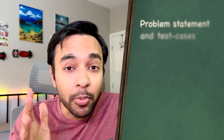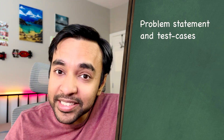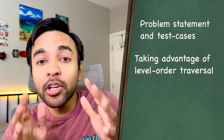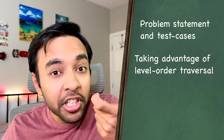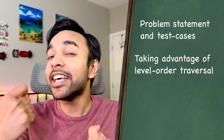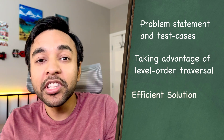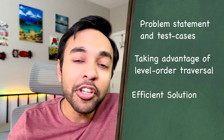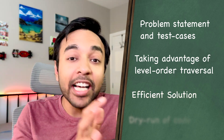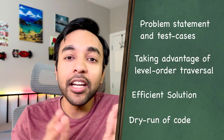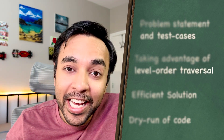You are given a tree and you have to determine if it is symmetric about the center. Hello friends, welcome back to my channel. I will explain the problem statement and we will look at some sample test cases. Going forward, we will see how you can take advantage of the level order traversal that you already know and tweak it a little to come up with an efficient iterative solution. We will also do a dry run of the code so you can understand and visualize how it works in action. Without further ado, let's get started.